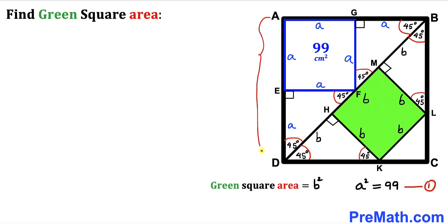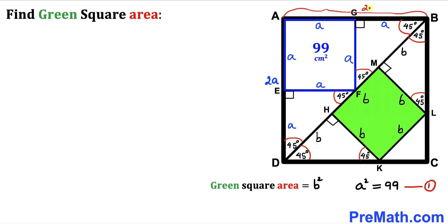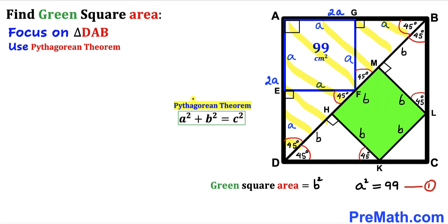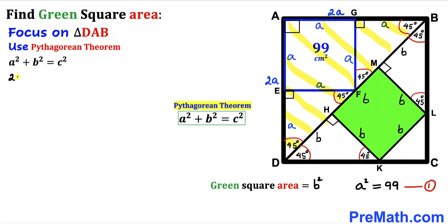Now we observe that side AD equals a + a = 2a, and likewise side AB = 2a. Focusing on the big right triangle DAB with legs 2a and 2a, we apply the Pythagorean theorem to calculate the diagonal BD, where BD is the hypotenuse.